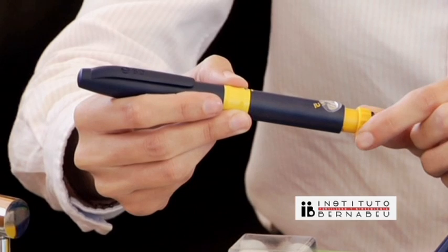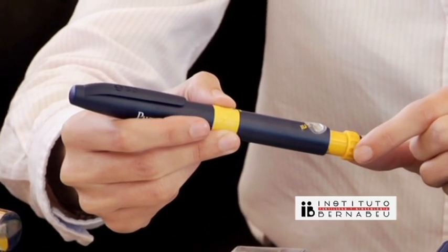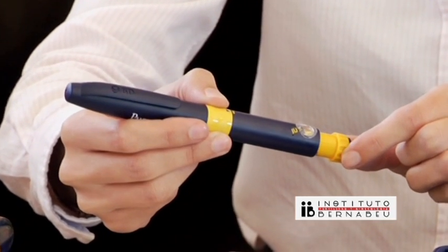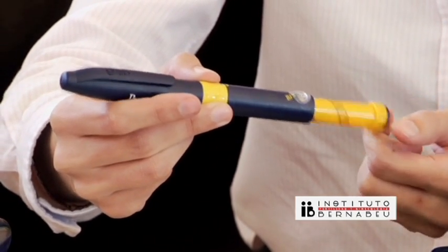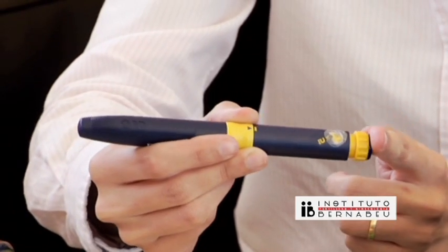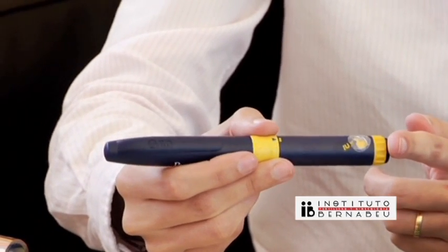It is a dial that allows you to choose the exact amount of units needed. If, for whatever reason, you select too many units, simply dial forward as far as it can go and push the injection button in completely. This is so you don't lose any medication.